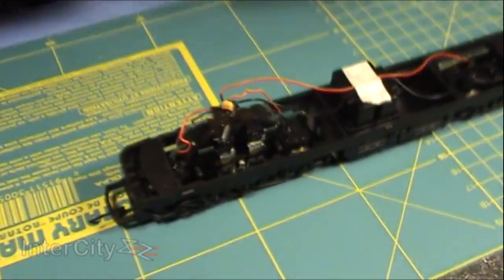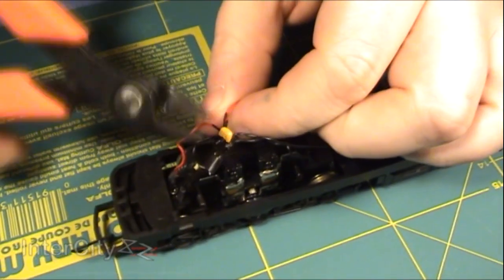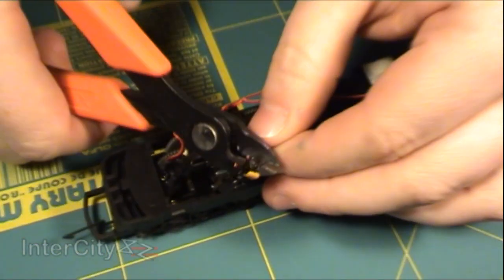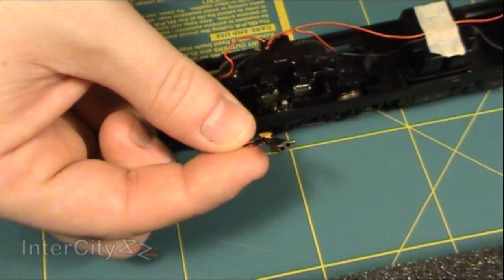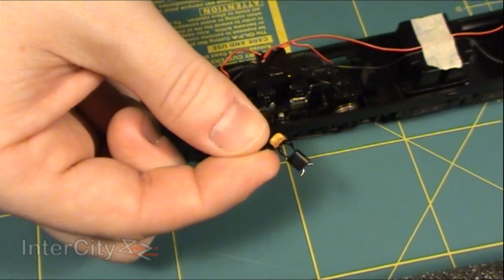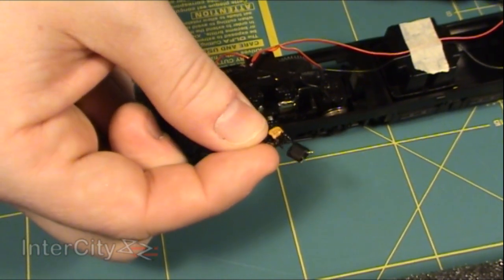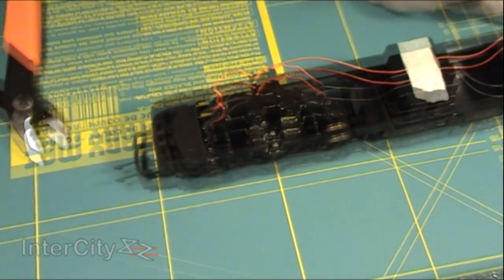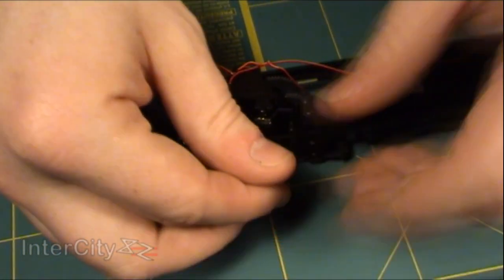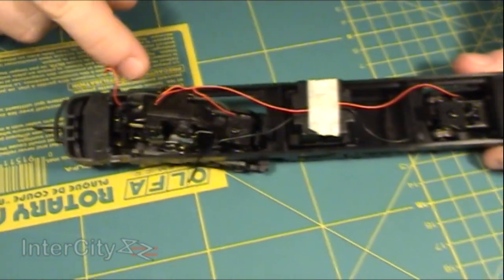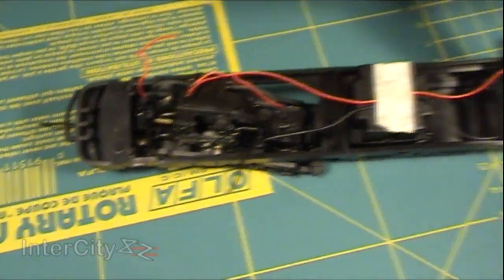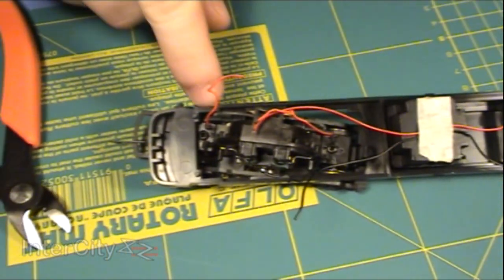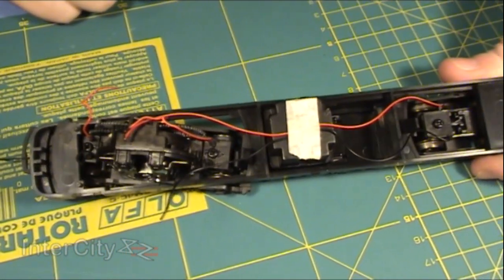Take the wire cutters again—just cut there and cut there. We don't need the capacitor anymore because that was part of the system designed to reduce interference with TVs. The DCC chip replaces that function, so we can throw it away. We've got all our black wires for one side of the track—you can see all the black wires come from contacts on the same side of the locomotive, and all the red ones come from the other side.